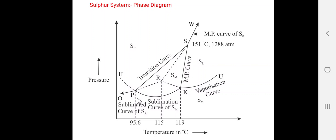The first stable curve is curve OP, called the sublimation curve of SR (rhombic sulfur). The second stable curve is curve PK, which is the sublimation curve of SM (monoclinic sulfur). The third stable curve is curve KU, called the vaporization curve of the liquid sulfur (SL).